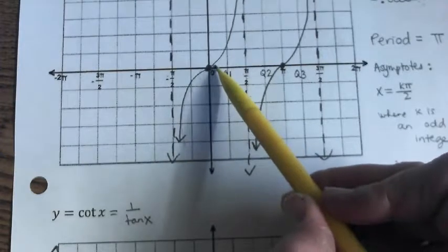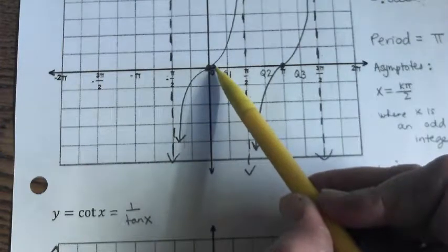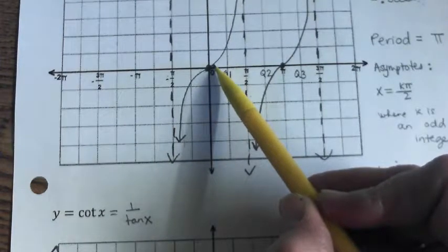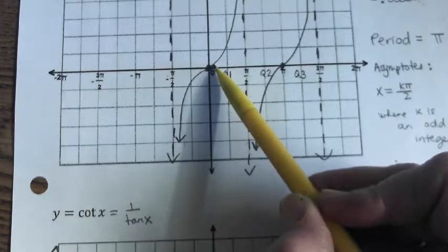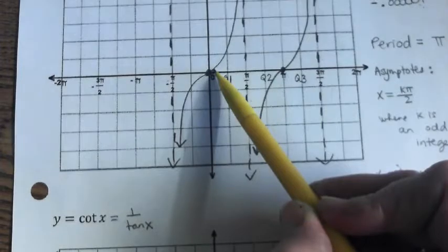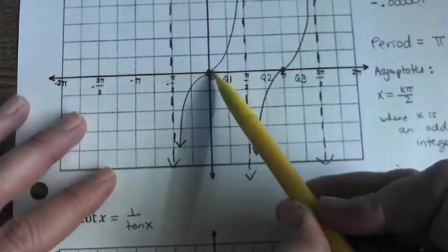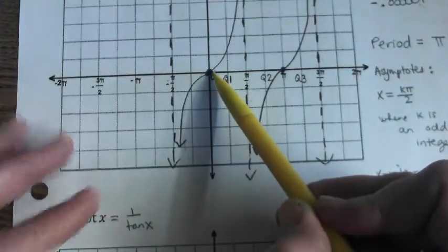And just after 0, we have a teeny tiny number. Let's pretend it's like 1 100th is our output. What's the reciprocal of a teeny tiny number? A huge number, right? The reciprocal of 1 100th is 100. The reciprocal, if we get even smaller, of 1 1 millionth is a million.